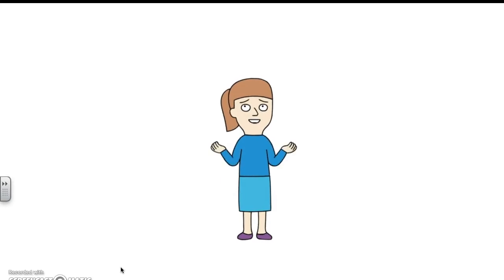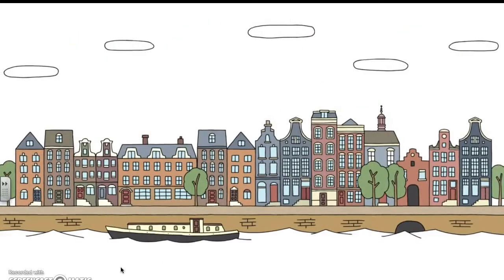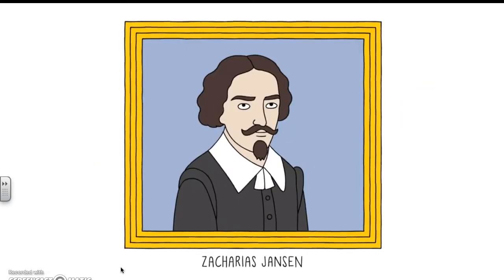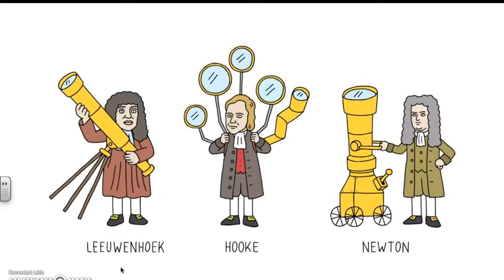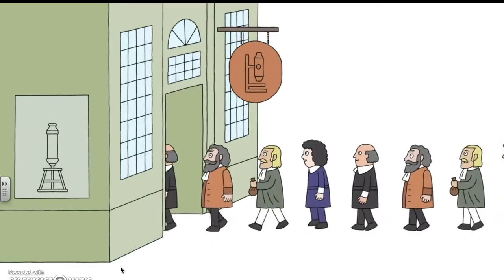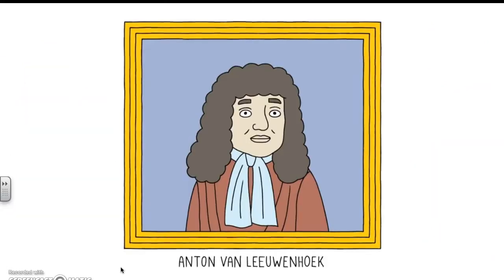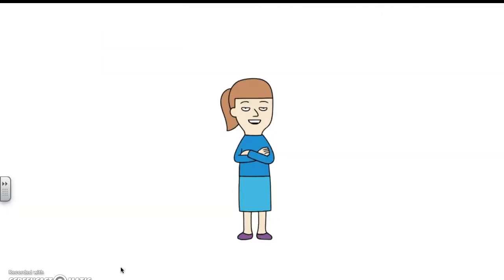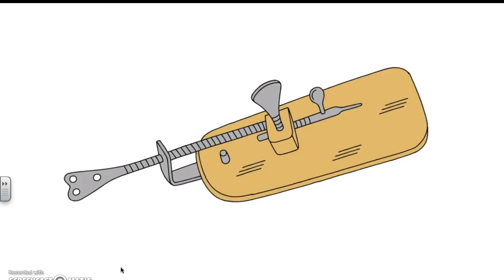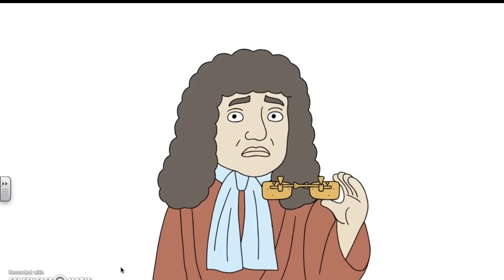It all started in the early 1600s in the Netherlands, where a spectacle maker named Zacharias Jansen is said to have come up with the first compound microscope, along with the first telescope. Both claims are often disputed, as apparently he wasn't the only person with a ton of glass lenses to play with at the time. Despite this, the microscope soon became a hot item that every naturalist or scientist wanted to use — much like the iPad of its day. One such person was a fellow Dutchman named Anton von Leeuwenhoek, who heard about microscopes and decided to make his own — a strange little contraption that looked more like a tiny paddle the size of a sunglass lens.